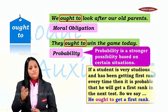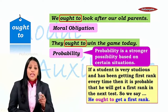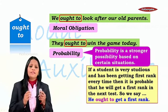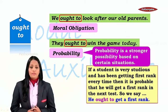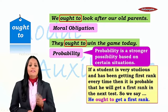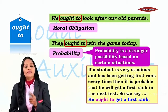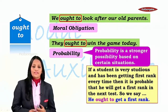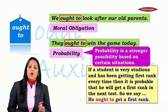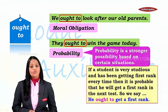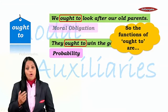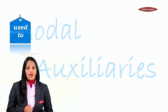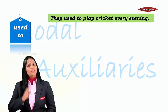Probability is a stronger possibility based on certain situations. For example, if a student is very studious and has been getting first rank every time, then it is probable that he will get a first rank in the next test — based on certain situations you are predicting something, so we say 'he ought to get a first rank.' The functions of 'ought to' are moral obligation and probability.